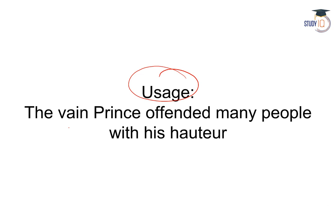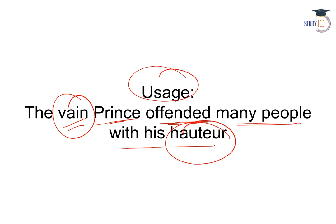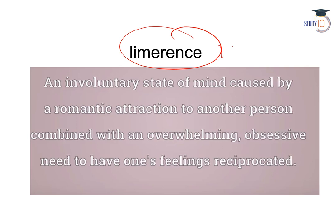Usage: The vain prince — that means ghamandi prince — he offended many people with his haughtiness, his arrogance. Bohot zyada ghamandi tha, toh us ghamandi se usne sab ko offend kar diya.